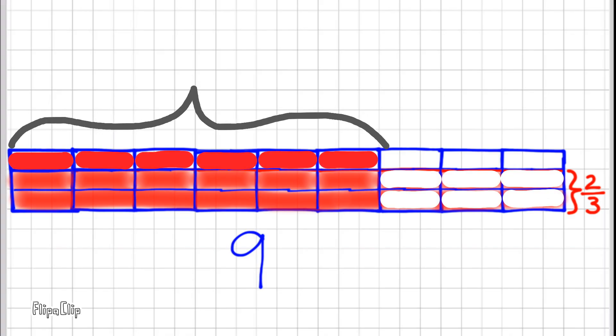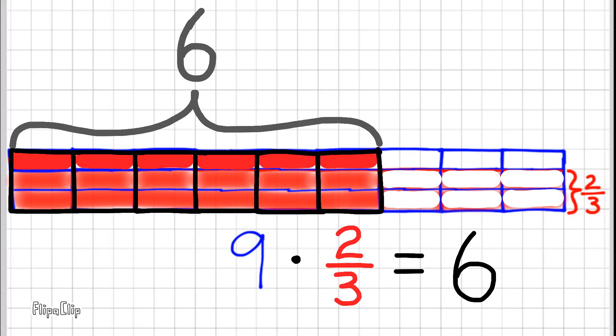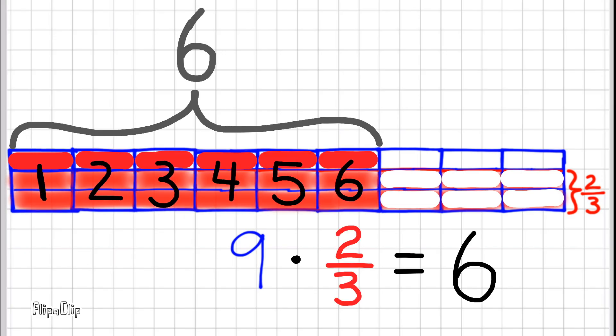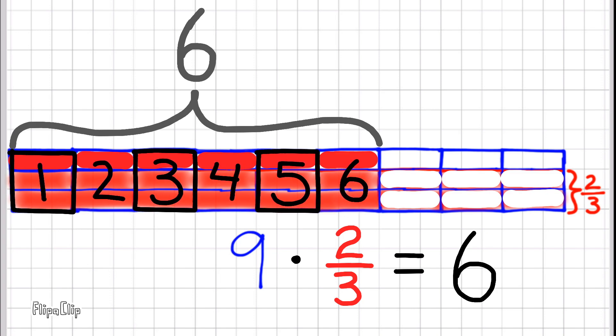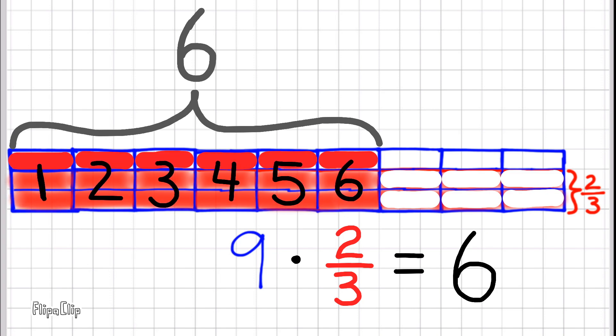I've decomposed it and rearranged it so that now I have six full units. The area of a parallelogram that has a base of nine units and a height of two-thirds units is six square units.